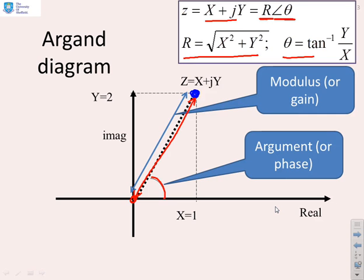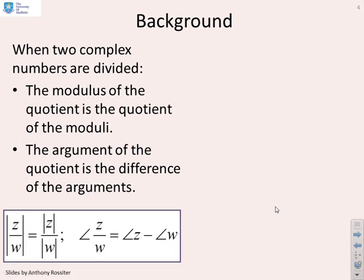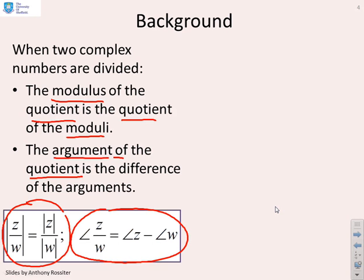Some background from the previous videos. We've shown that if you divide two complex numbers, then the modulus of the quotient is the quotient of the moduli. The modulus of z over w is mod z over mod w, and the argument of the quotient is the difference of the arguments. So the argument of z over w equals arg z minus arg w.